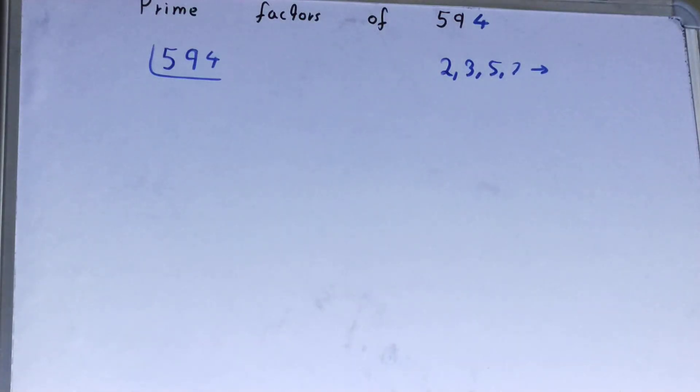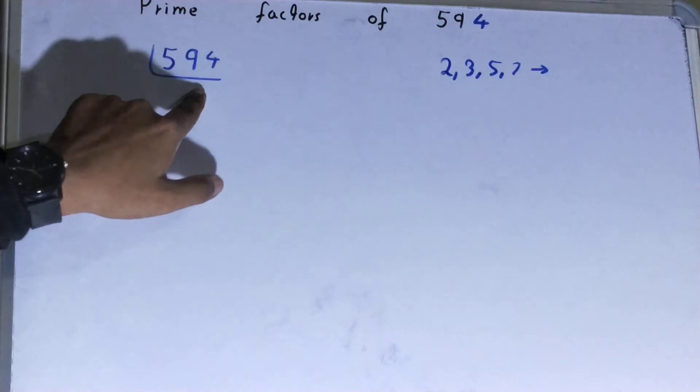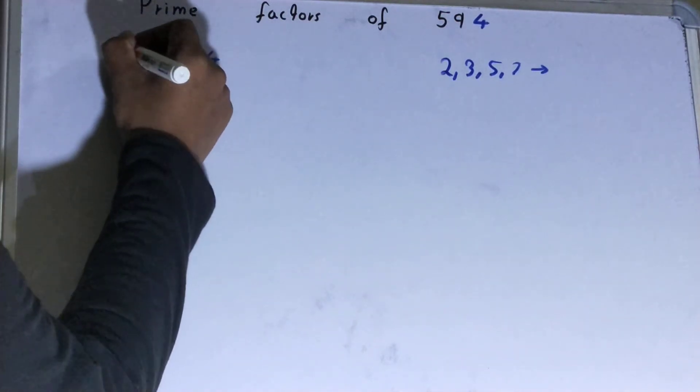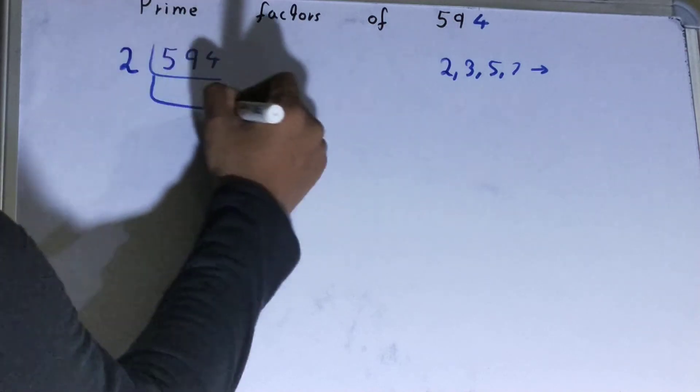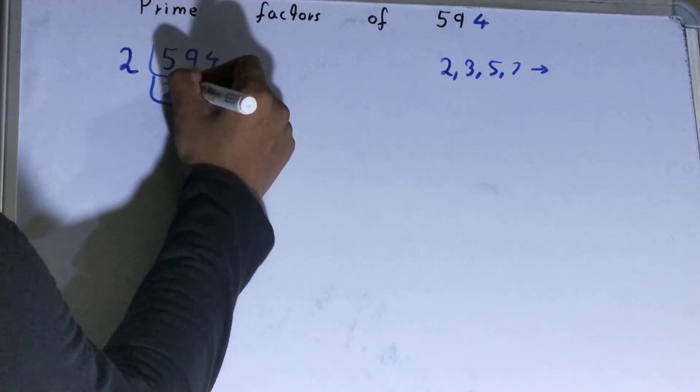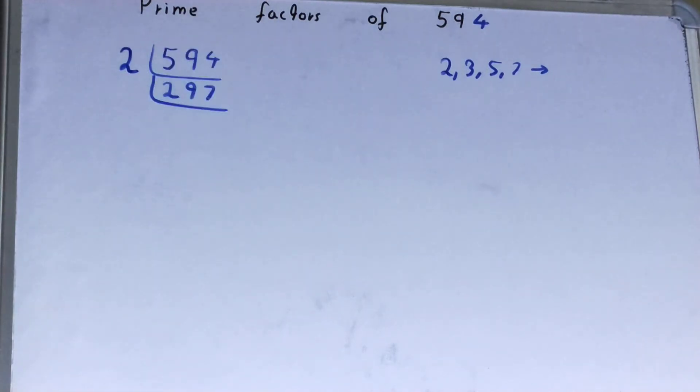We'll start with the lowest prime number, which is 2. Is 594 divisible by 2? Yes, it is because 594 is an even number. So divide it and you will be left with 297.